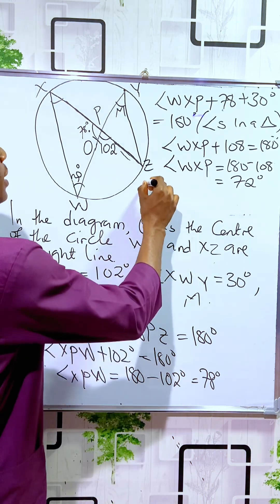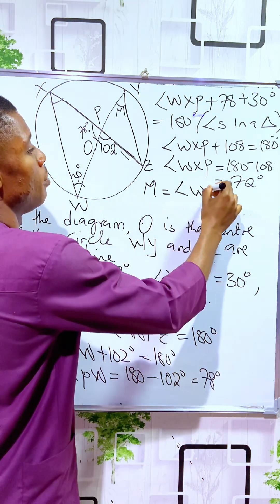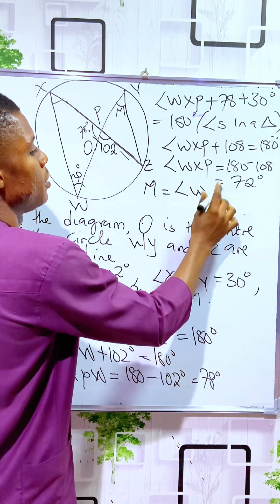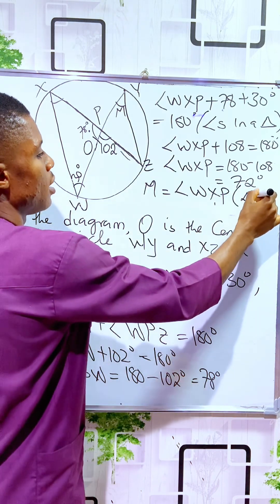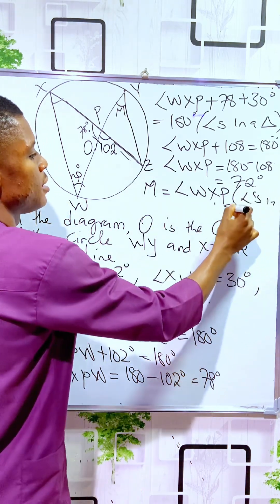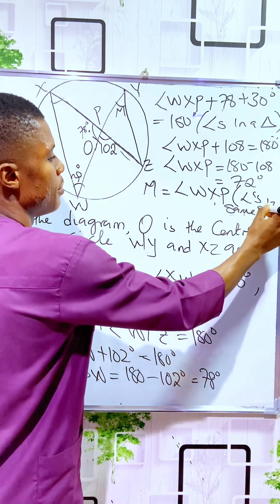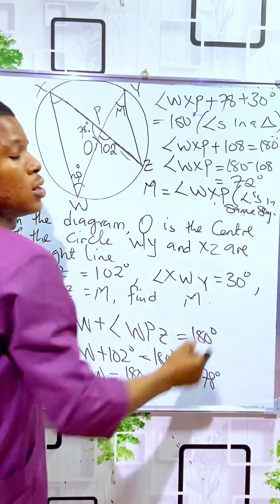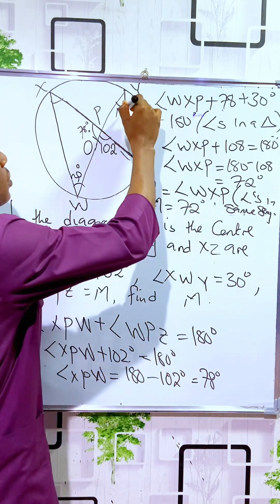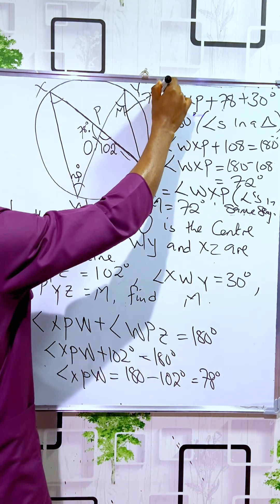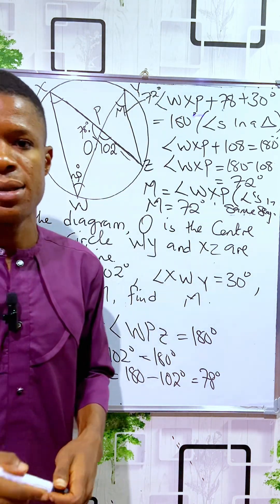The angle M is equal to the angle in the same segment. Therefore, M is 72 degrees. That's our answer!